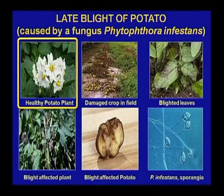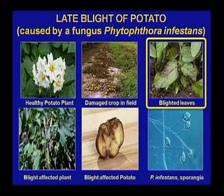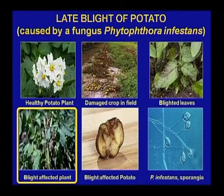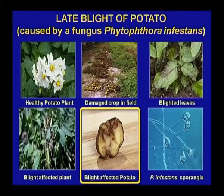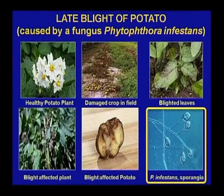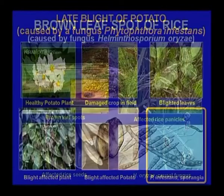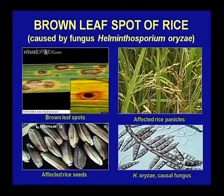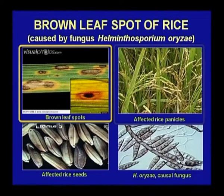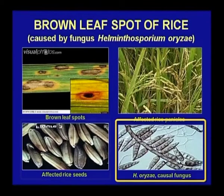You can see the healthy potato plants, the damaged crops in the field, the blighted leaves, and the blight-affected plant. The potato fruit is completely affected by the pathogen and has taken a dark shape. Phytophthora infestans is the causal organism, and its sporangia play the main role. Brown leaf spot of rice caused the Bengal famine witnessed in India in 1943, caused by Helminthosporium oryzae. You can see the brown leaf spots on the rice, affected rice panicles, affected rice seeds, and Helminthosporium oryzae as the causal fungus.